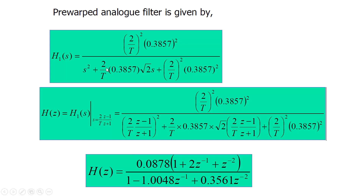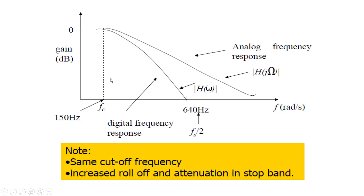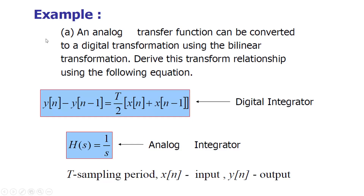The frequency response shows the cutoff frequency at 150 Hz and half the sampling frequency at 640 Hz. The analog frequency response and the digital filter frequency response are plotted — cutoff frequency for both is 150 Hz. The digital frequency response shows increased rolloff and increased attenuation in the stop band compared to the analog counterpart.